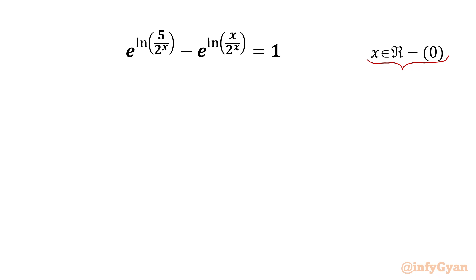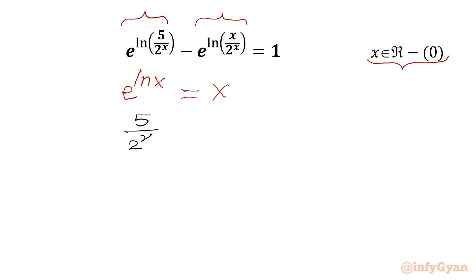Here x cannot be equal to zero. Let's get started by writing one powerful exponent law: e raised to the power ln x is equal to x. This property we will apply here. Our equation is (5/2)^x minus (x/2)^x equal to 1.